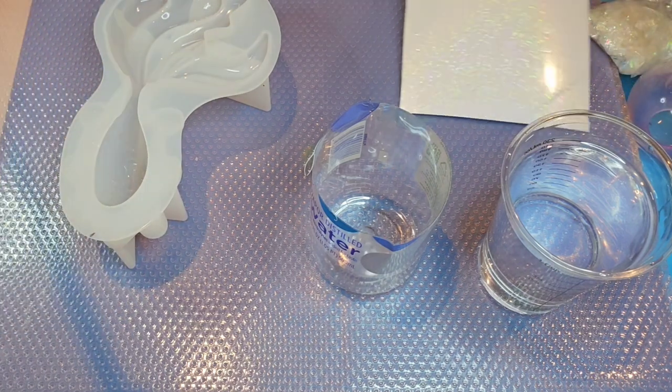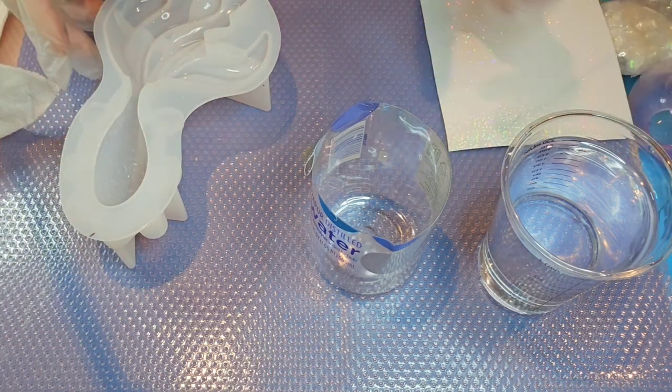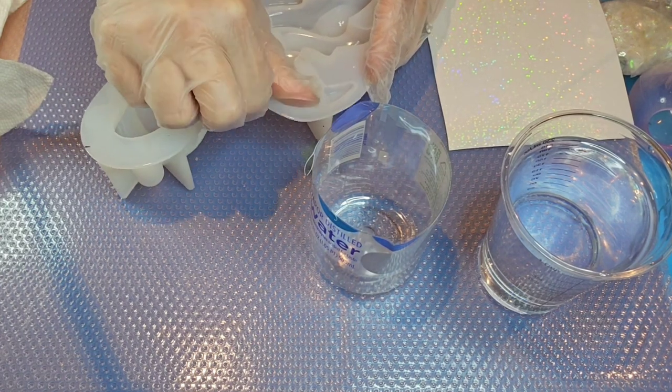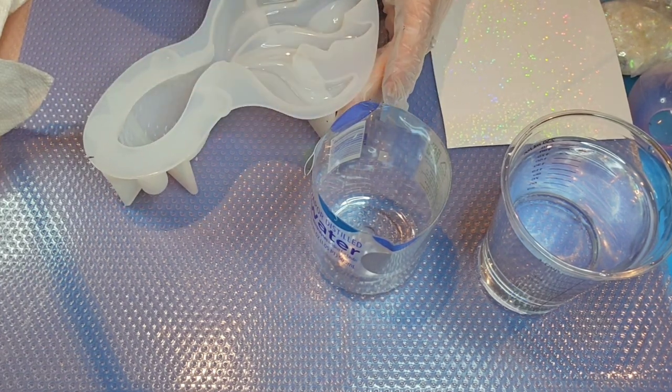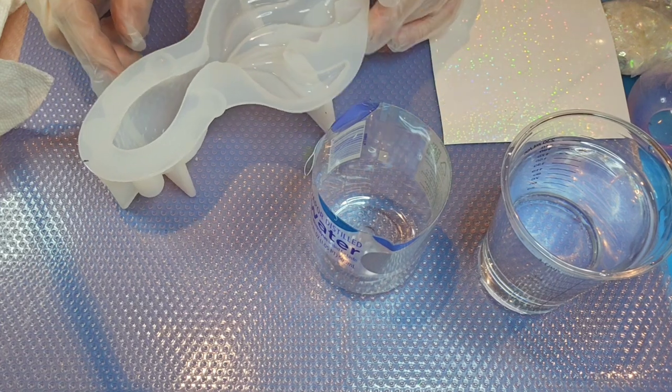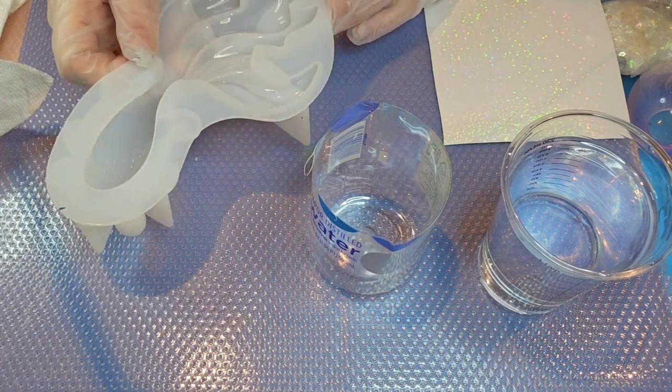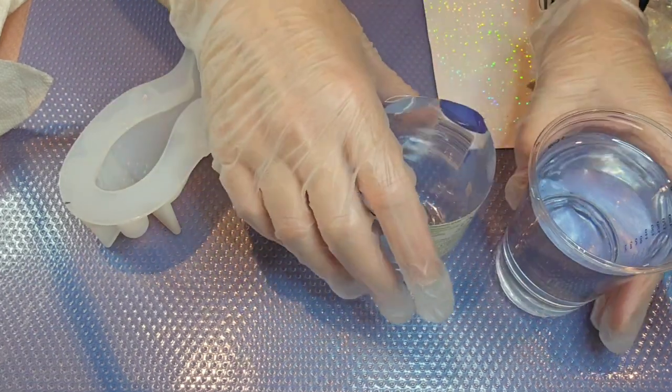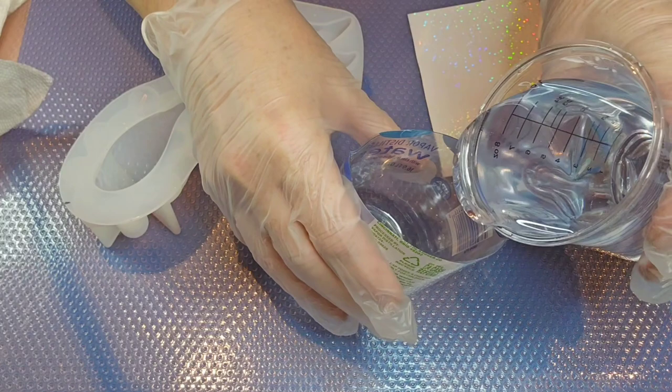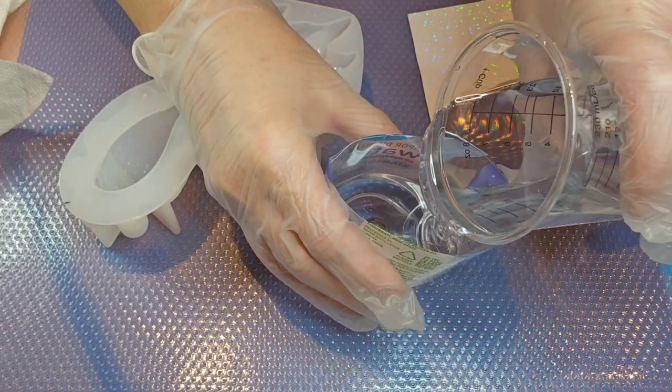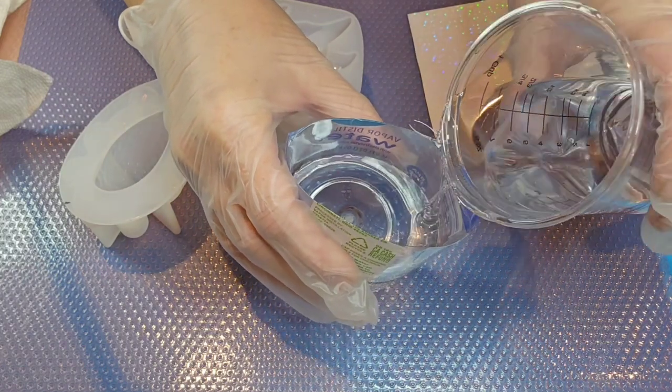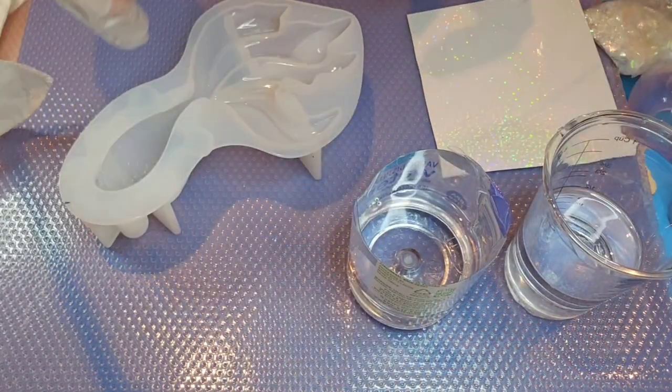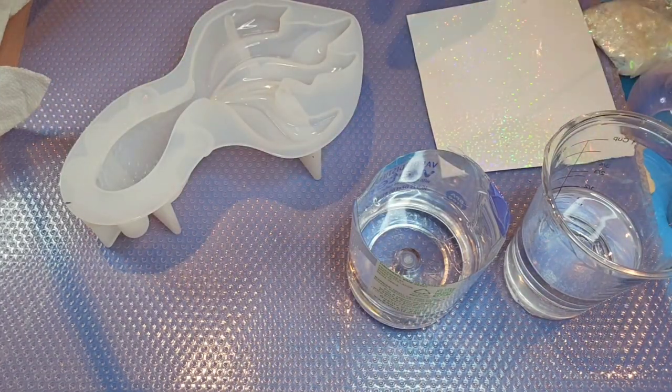So now what I'm going to do is I'm trying to remember how much resin this took. Gosh, I'm thinking it takes about, I'm going to guess three to four ounces. I'm going to probably say maybe four ounces just to play it safe, so I'm going to pour four ounces in this cup. Okay, that's about four. That might not be quite enough but it's going to be close.